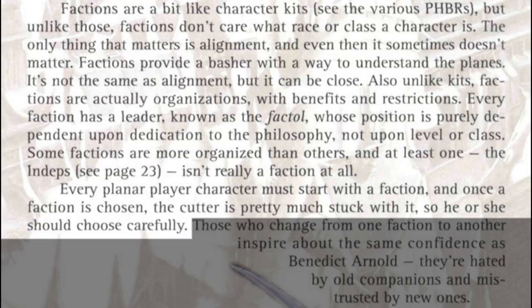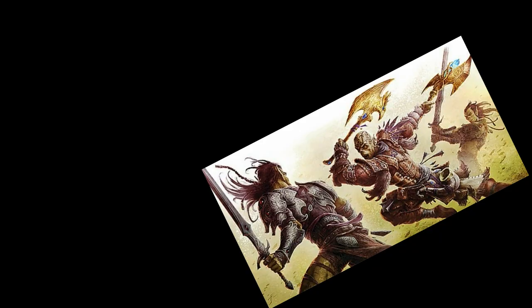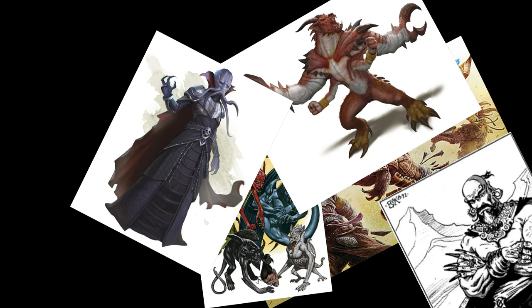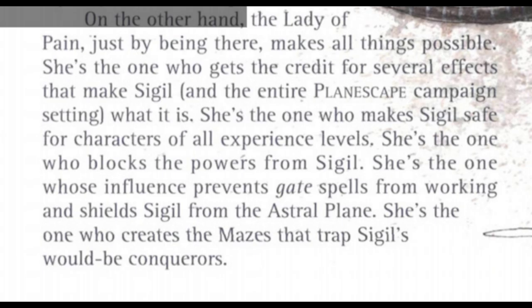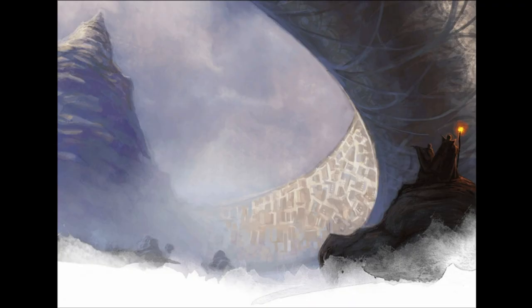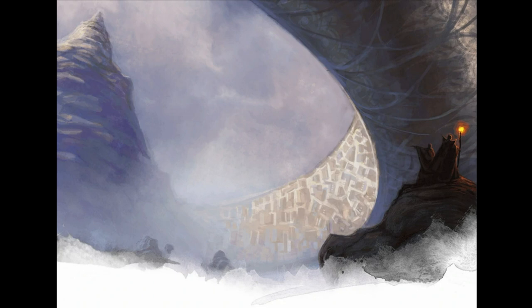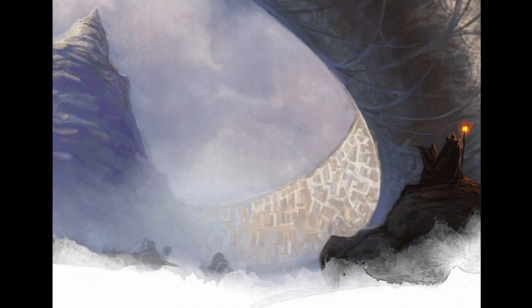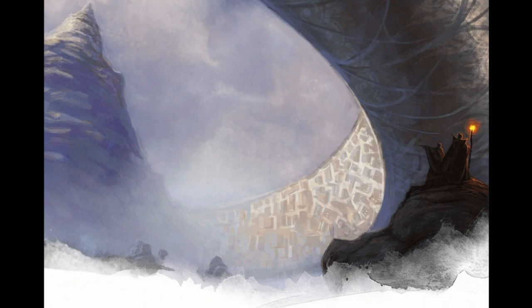Of course, if you were to have every danger in the known multiverse able to wander into Sigil, then you needed something to regulate it. The city was supposed to be strange, but it wasn't supposed to be total carnage. This is where the Lady of Pain came in. In the Planescape setting book, she is described as follows: the Lady of Pain, just by being there, makes all things possible. She's the one who makes Sigil safe for characters of all experience levels, blocks the powers from Sigil, prevents gate spells from working, shields Sigil from the Astral Plane, and creates the maze that traps Sigil's would-be conquerors. Basically, she can be used by a DM to justify why a city can be filled with so many dangerous creatures and yet a level 1 party could fit in — a useful tool for a dungeon master, and also a fascinating character that Cook loved so much she became the entire logo for the Planescape setting.